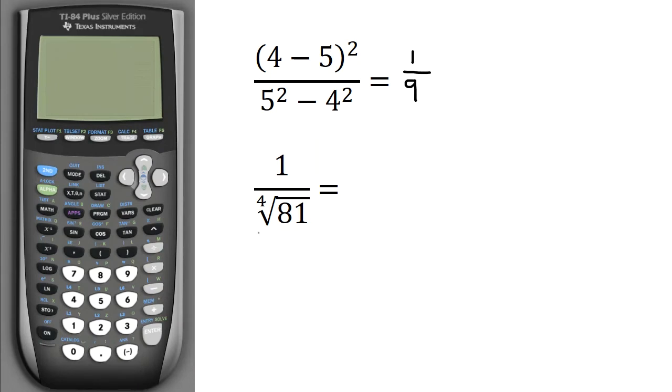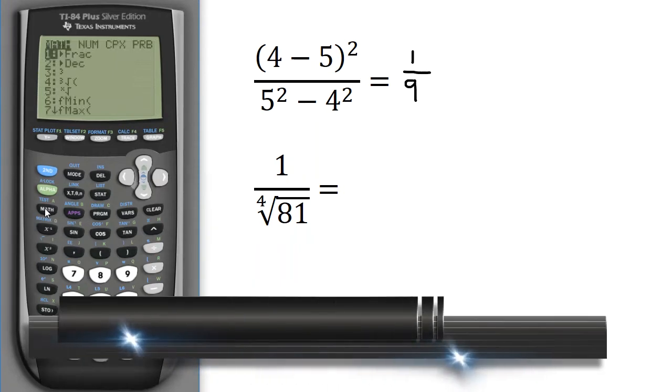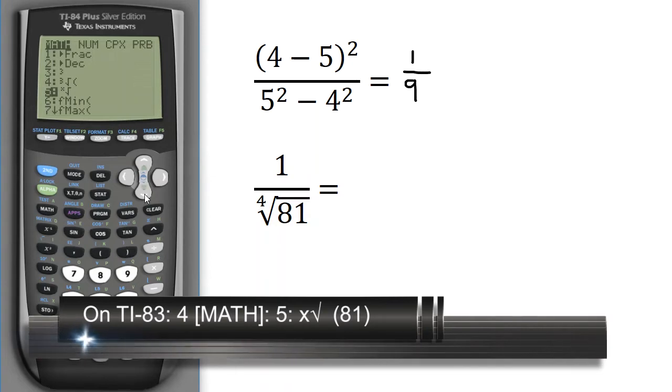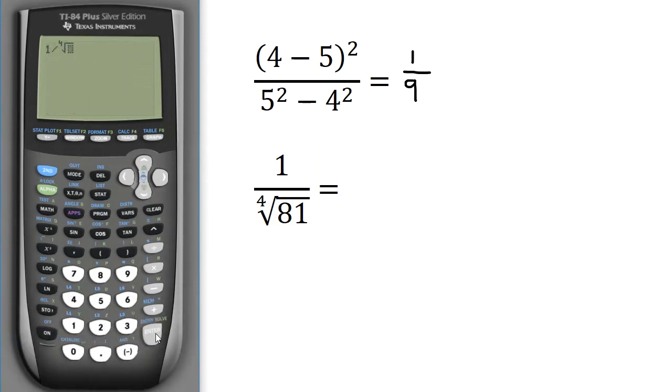Next, I want to calculate 1 divided by the fourth root of 81. So that's 1 divided by, and now I'm going to have to enter this fourth root of 81. So I'm going to hit 4, and then the Math key, and I'm going to need this number 5 here. I can scroll down to 5, or I can hit the 5 key, and that hit Enter, and that puts that at the fourth root, because I put 4 first of all, 81.